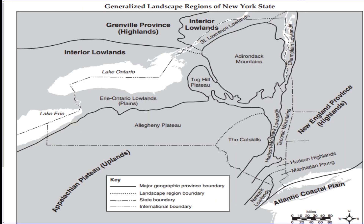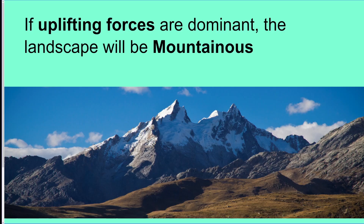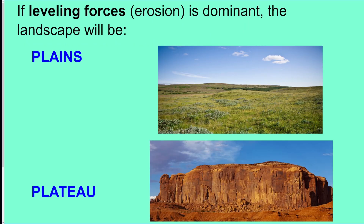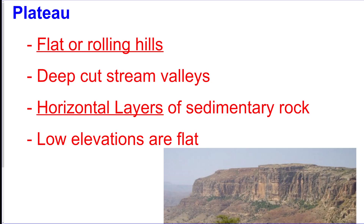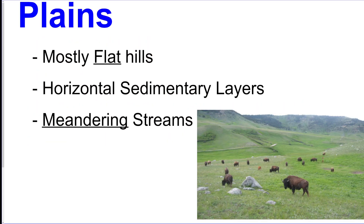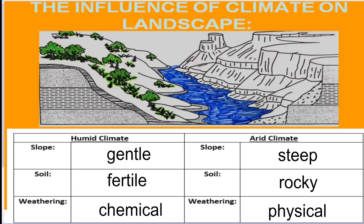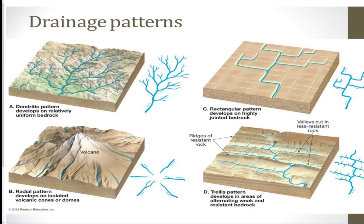You should know how to read landscape maps. Uplifting forces mean mountains are being formed — the landscape is going up. Leveling forces mean erosion is flattening things — that produces plains or plateaus. Plateaus are not only flat; they can also be rolling hills. Plains are definitely flat and have many meandering streams. Humid climates show gentle, fertile land with chemical weathering; arid climates are steep, rocky, and dominated by physical weathering — like a desert versus a rainforest. Know your four stream drainage patterns and be able to identify them from pictures.